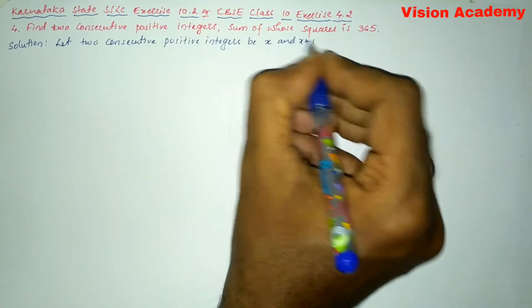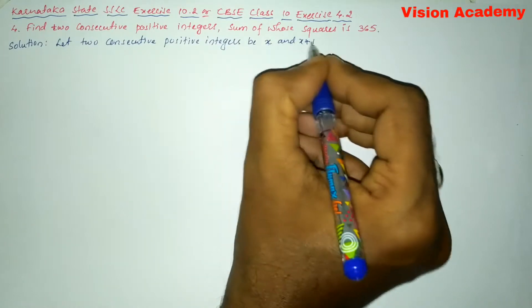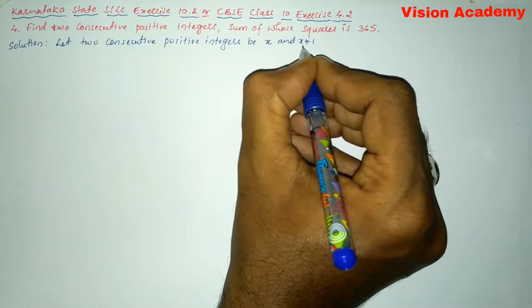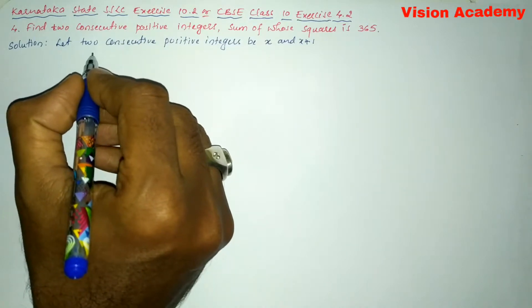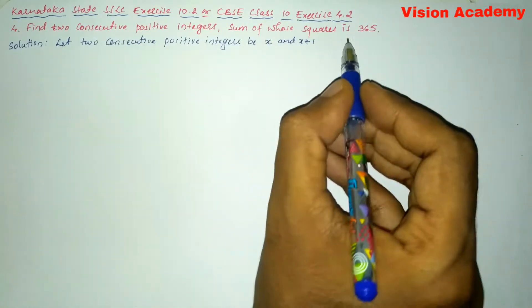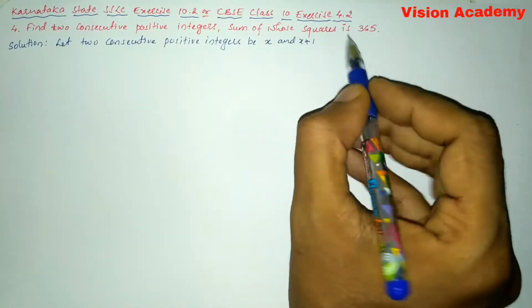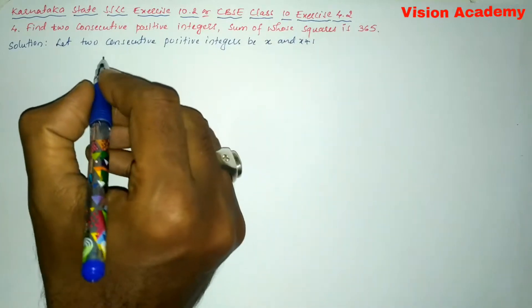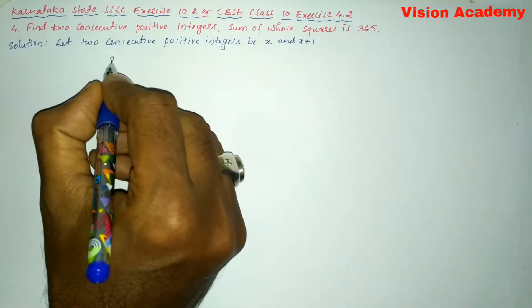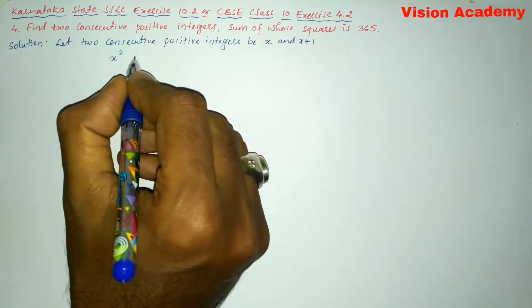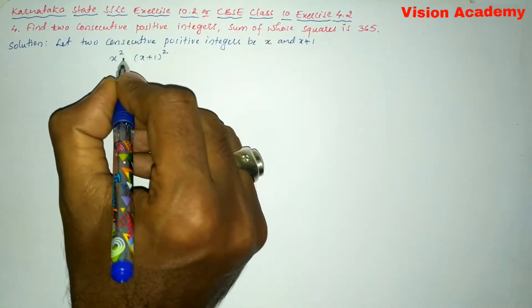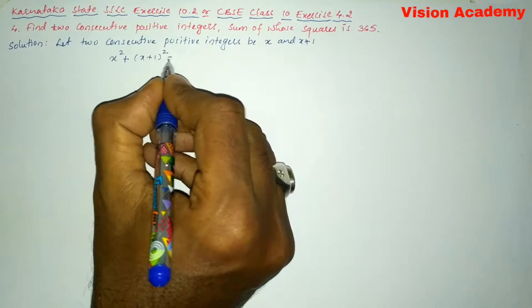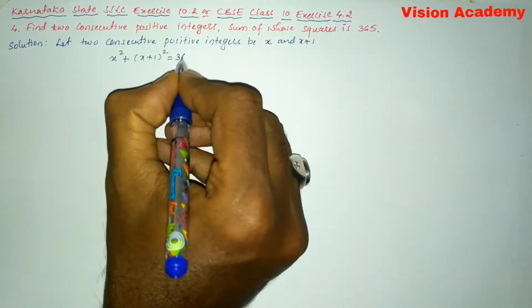Consecutive means one after the other. If one number is x, the next number is x plus one. They have given that the sum of squares is equal to 365, that is x squared plus (x plus 1) whole squared is equal to 365.